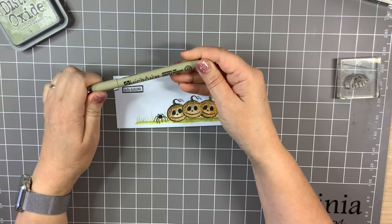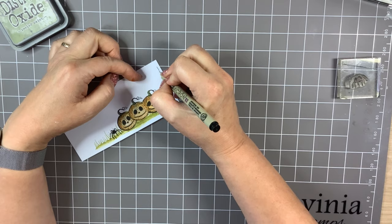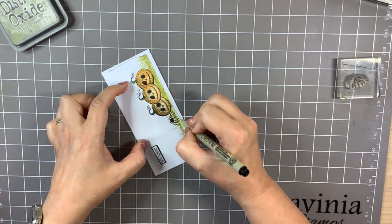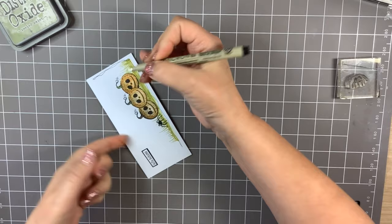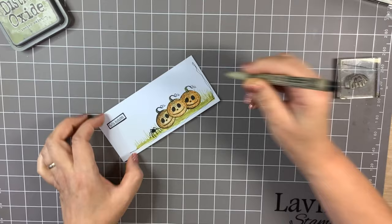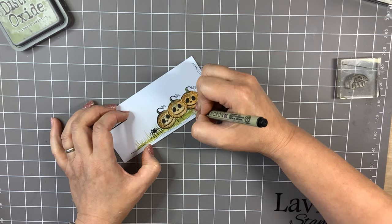Now, I'm going to use a micron pen and just add a little squiggly line. Just freehand. And I'm also going to add just a few little squids, like extra blades of grass.